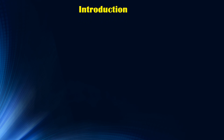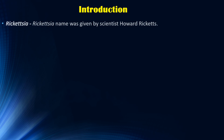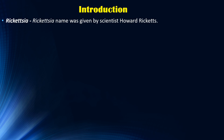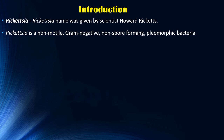Let's start with a short introduction about Rickettsia. The name Rickettsia was given by scientist Howard Ricketts. Rickettsia is non-motile, that is, it cannot move from one place to another. It is gram-negative in nature. It is non-spore forming, that is, it is unable to form any kind of spores. And it is pleomorphic in nature.